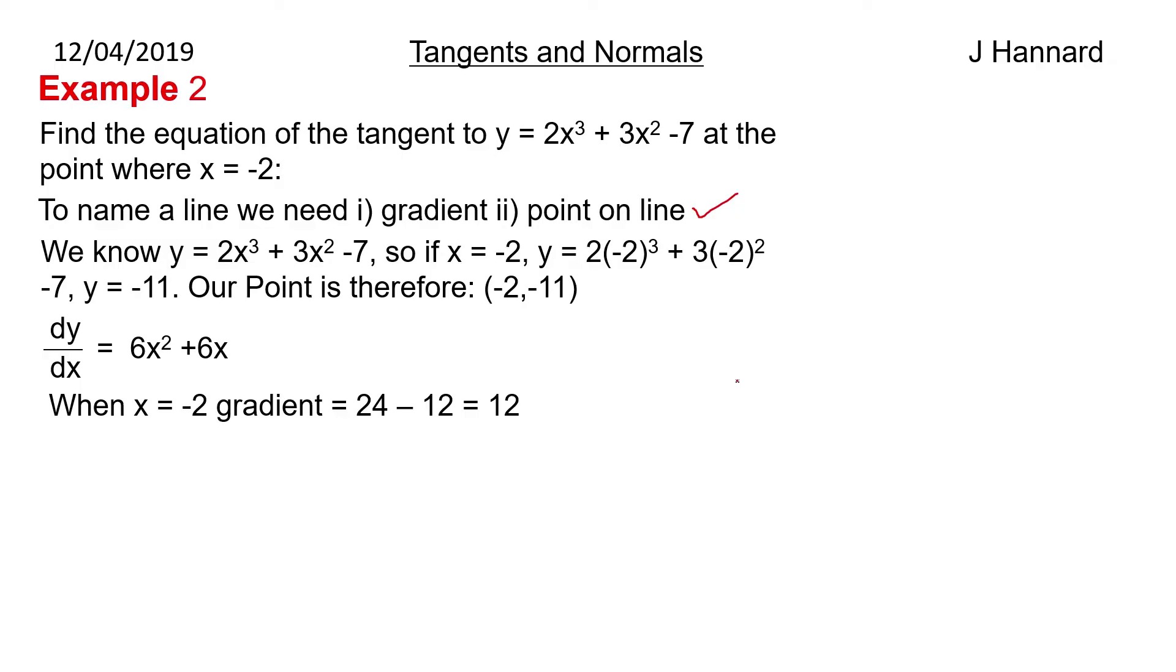So we've got our point, we've got our gradient. We now use y - b = m(x - a) and plug in the numbers. So you get y - (-11) = 12(x - (-2)). Sort out your double negatives first, then expand, then tidy up. And you get y = 12x + 17.